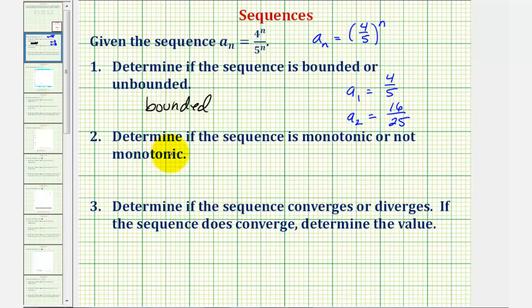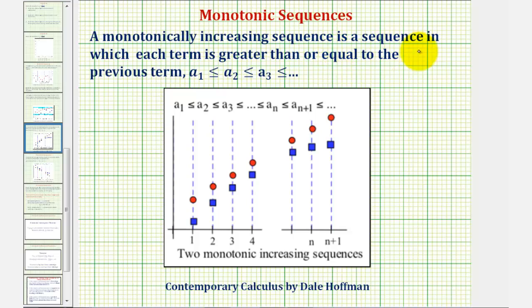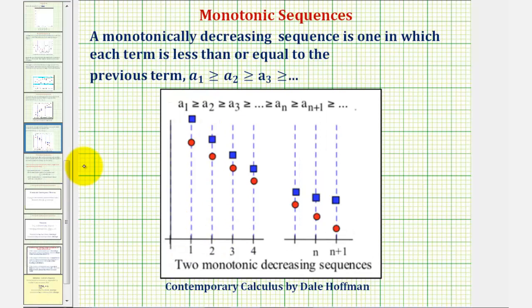Now let's review the definition of a monotonic sequence. A monotonically increasing sequence is one in which each term is greater than or equal to the previous term. A sequence is monotonically decreasing if each term is less than or equal to the previous term. If a sequence is either monotonically increasing or monotonically decreasing, we say we have a monotonic sequence.